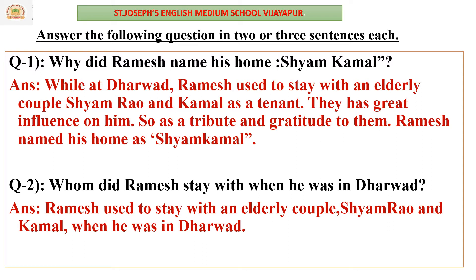First question: Why did Ramesh name his home 'Sham Kamal'? While at Dharwar, Ramesh used to stay with an elderly couple, Sham Rao and Kamla, as a tenant. They had a great influence on him, so as a tribute and gratitude to them, Ramesh named his home 'Sham Kamal.' He was very grateful to this elderly couple who helped him and treated him like their own son.